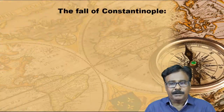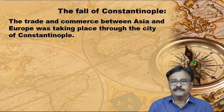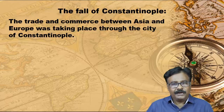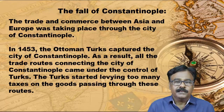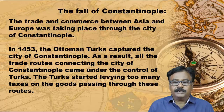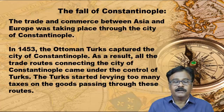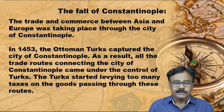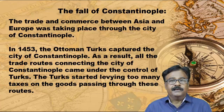The Fall of Constantinople: The trade and commerce between Asia and Europe was taking place through the city of Constantinople, capital of the Byzantine Empire. An important event took place in 1453 — the Ottoman Turks captured the city of Constantinople. As a result, all the trade routes connecting to the city of Constantinople came under the control of the Turks. The Turks started imposing too many taxes on goods passing through these routes.